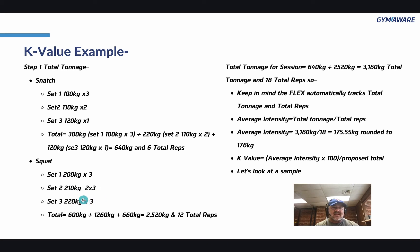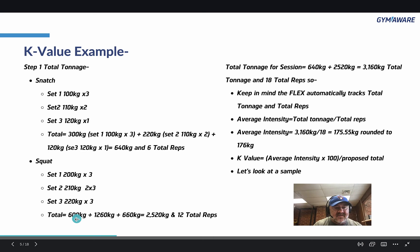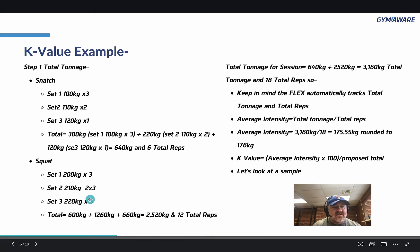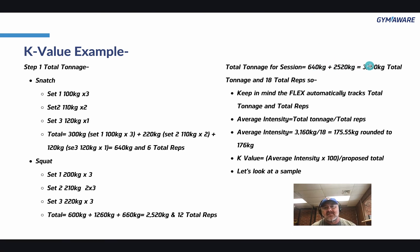For the squat: 200 for 3, two sets of 3 at 210, and 220 for 3. The first set gives 600 kilograms, the second sets give 1,260, and the third gives 660, for a total tonnage of 2,520 and 12 reps. The combined session total tonnage is 3,160 kilograms and 18 reps. Keep in mind the Flex automatically tracks total tonnage and total reps for you — you don't have to worry about it.